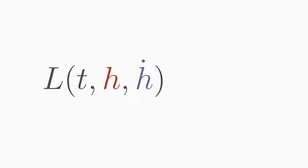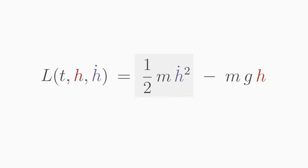Step number two: Set up the Lagrange function L. The kinetic energy is one half m v squared or one half m h dot squared. The potential energy in the gravitational field is mgh. Thus the Lagrange function is one half m h dot squared minus mgh.